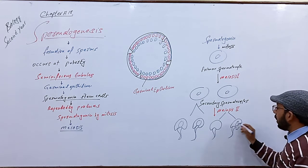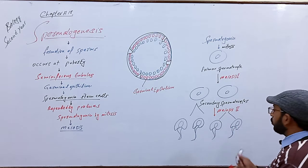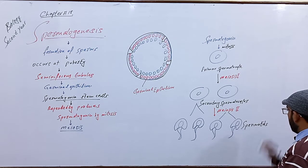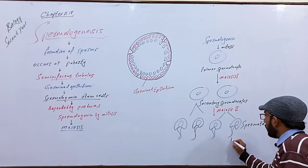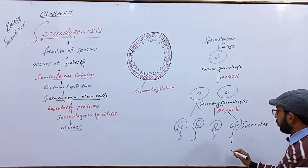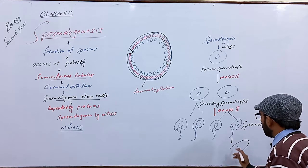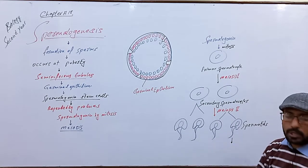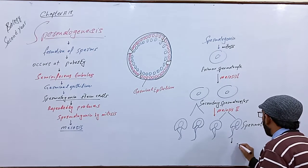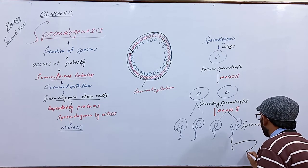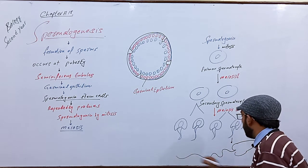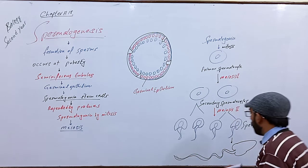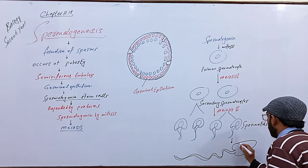These are the immature sperm called spermatids. These spermatids mature into sperm form. Sperm has three portions: the sperm head, the neck, and the tail.